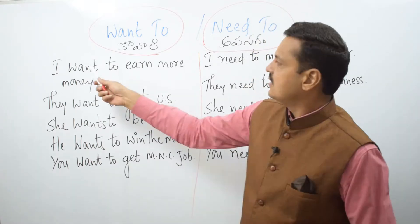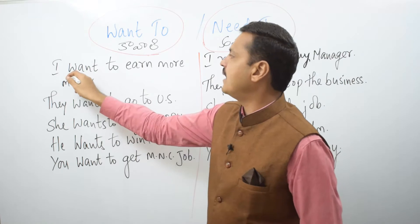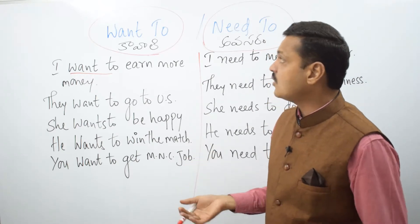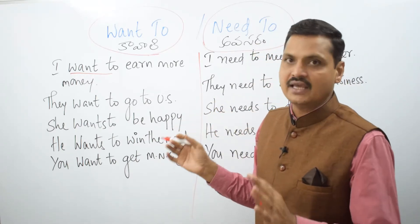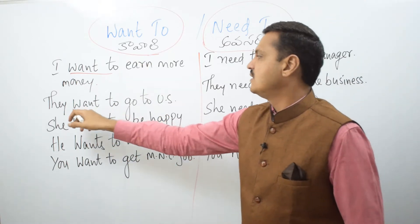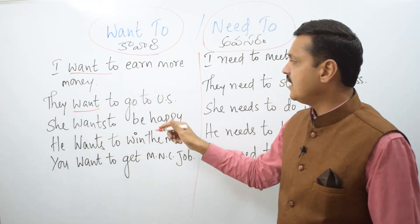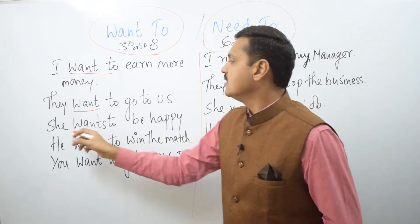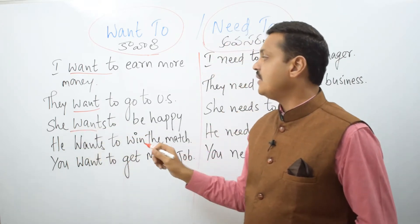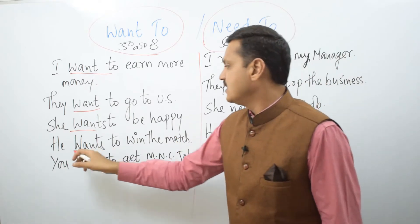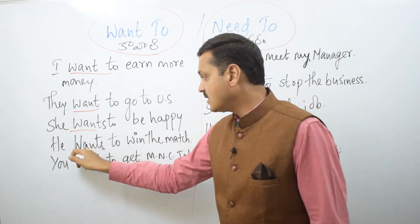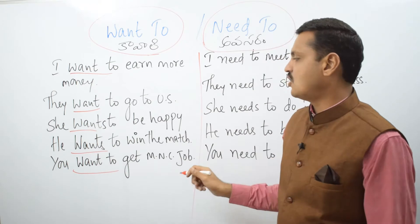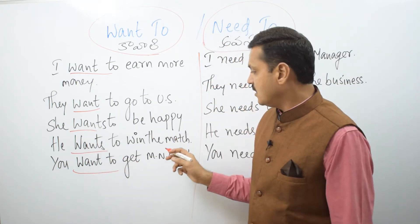So let's see some examples. I want to earn more money. They want to go to the US. She wants to be happy.